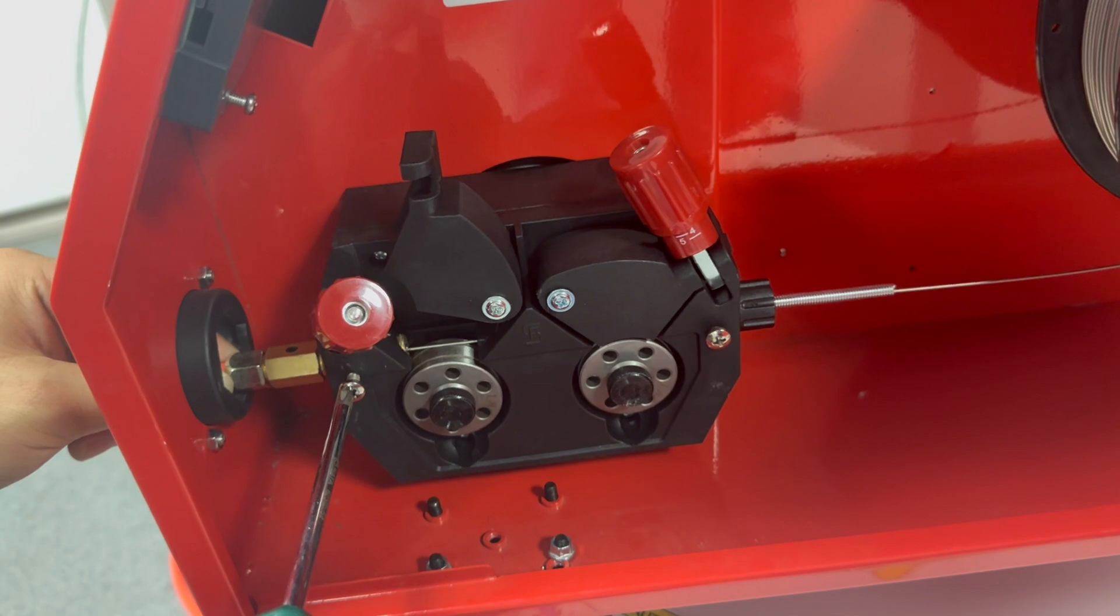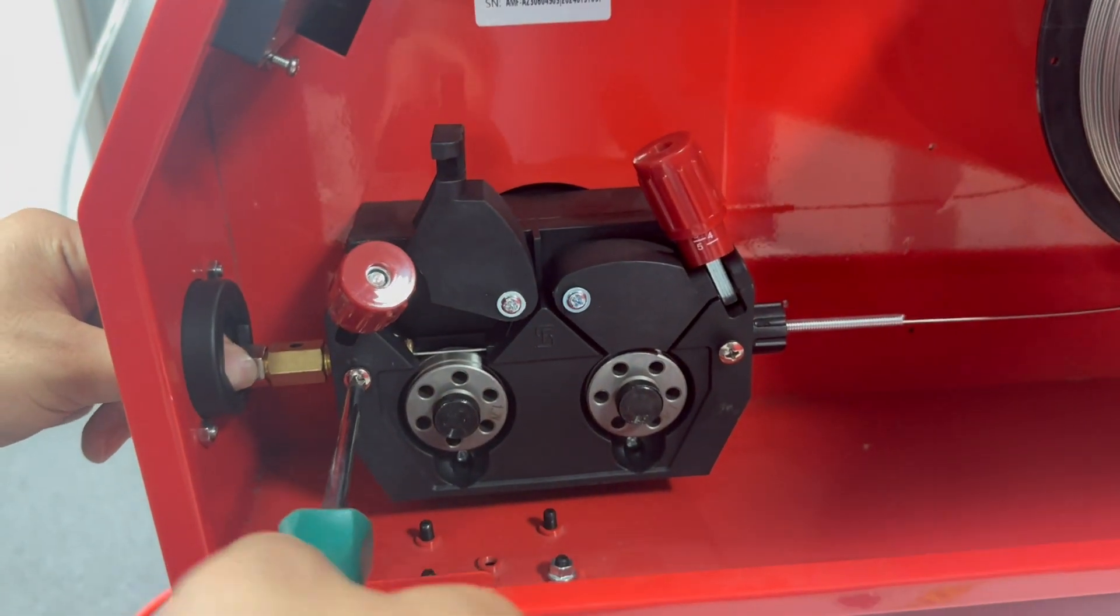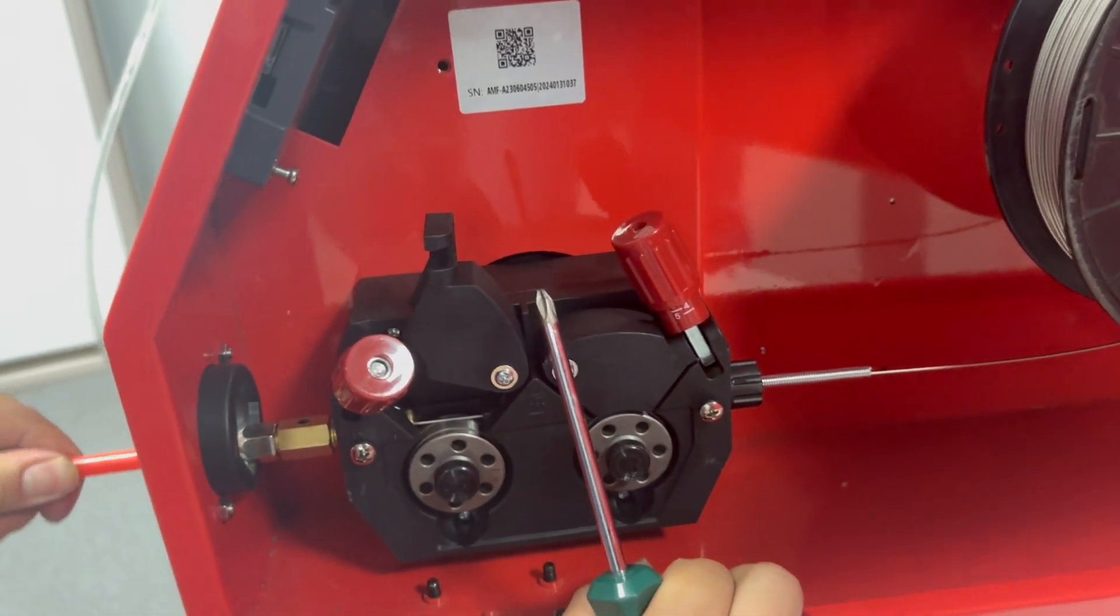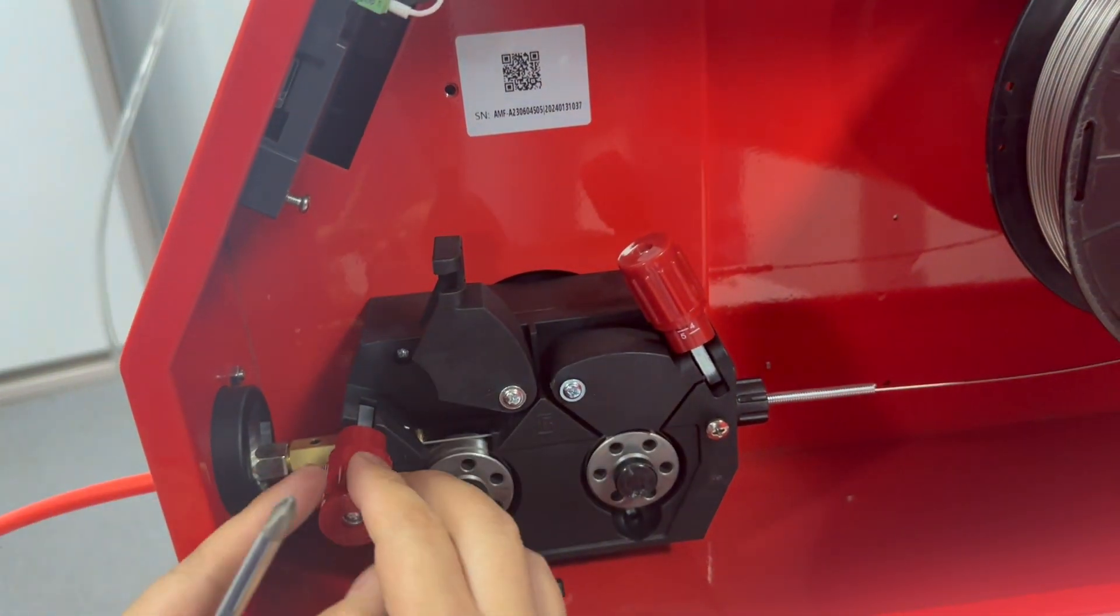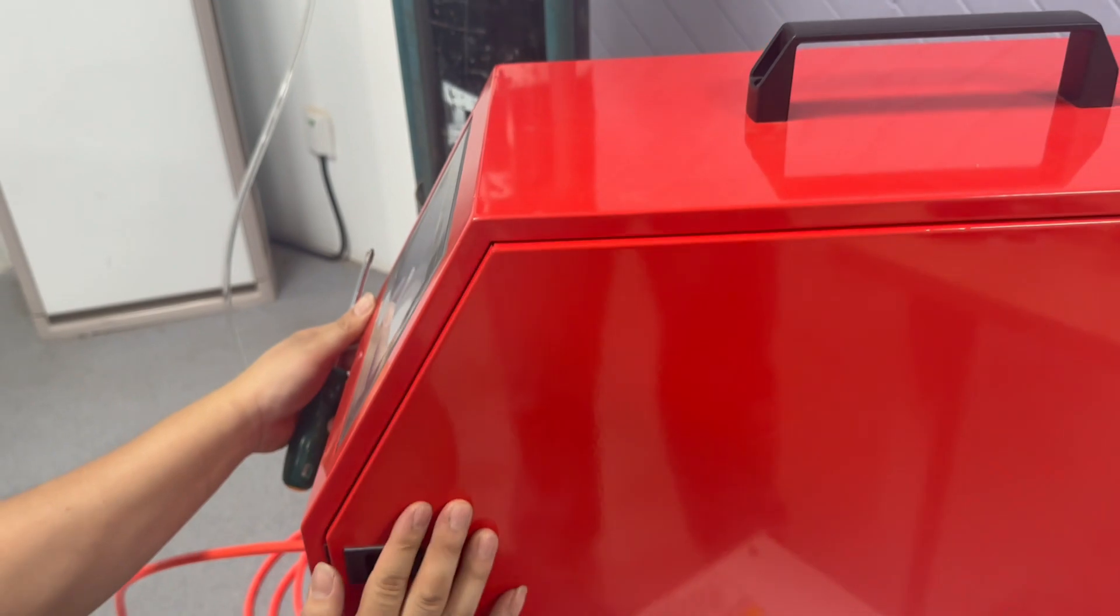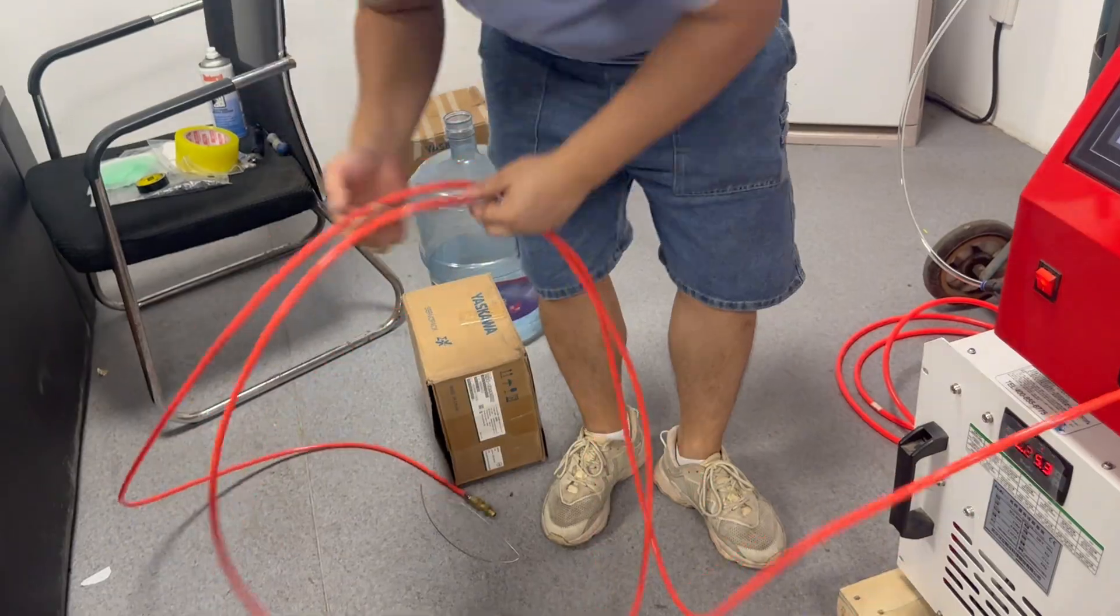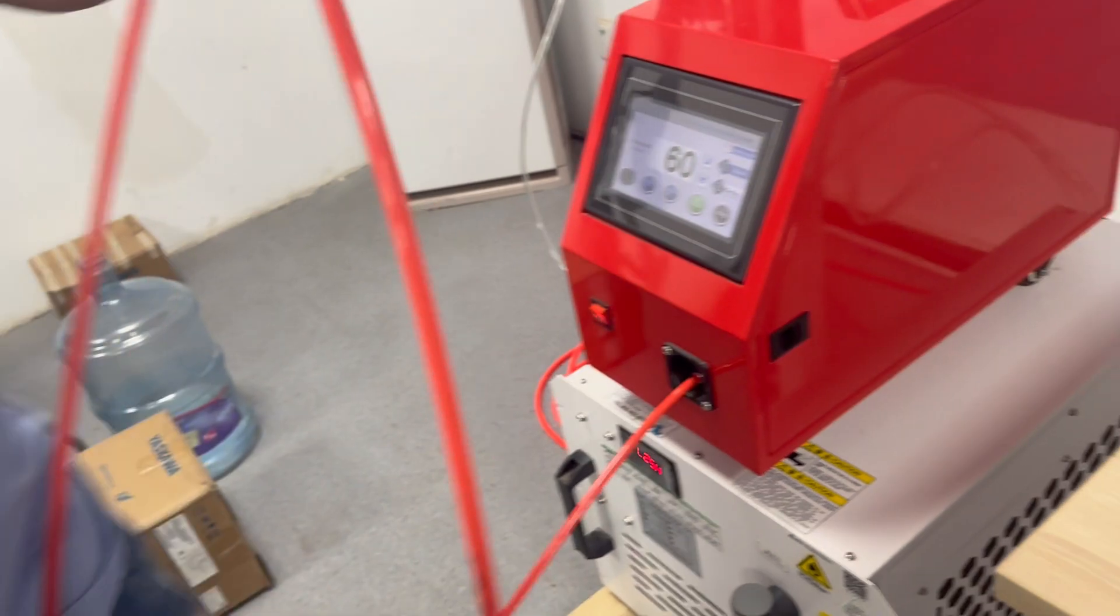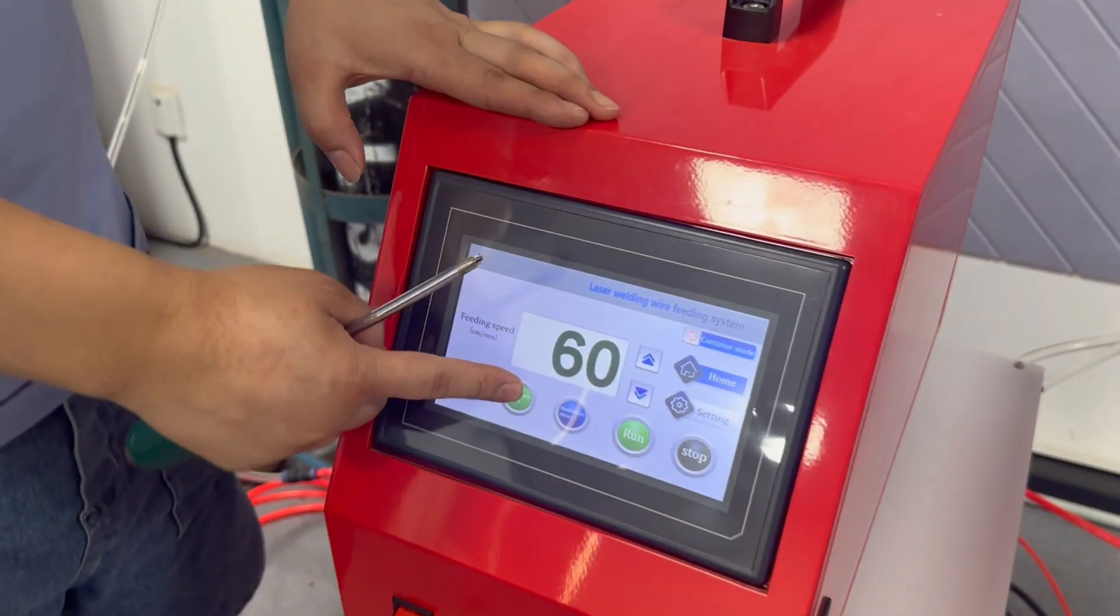There is a screw here, tighten it. This way our tube is fixed and won't come out, and then close it. We should straighten this wire as much as possible, release it on the ground.